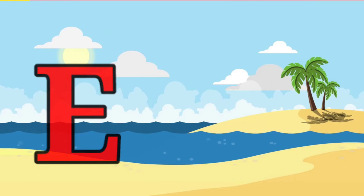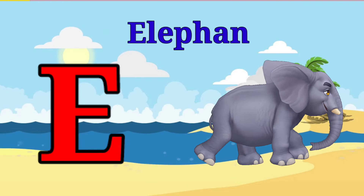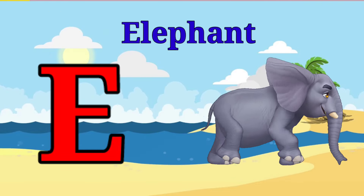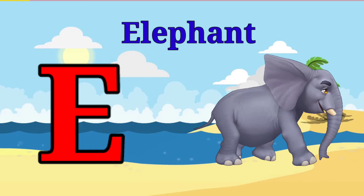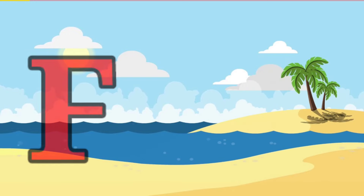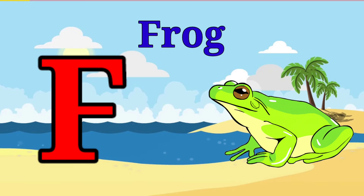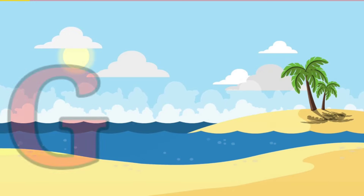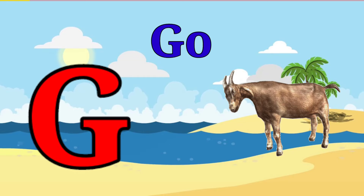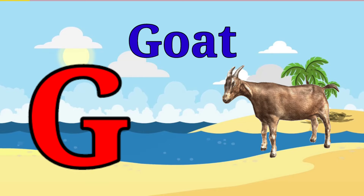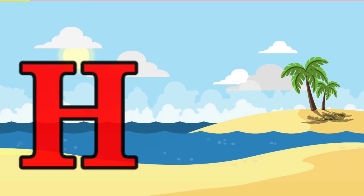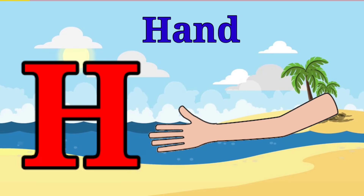E is for elephant, e-e-elephant. F is for frog, f-f-frog. G is for goat, g-g-goat. H is for hand, h-h-hand.